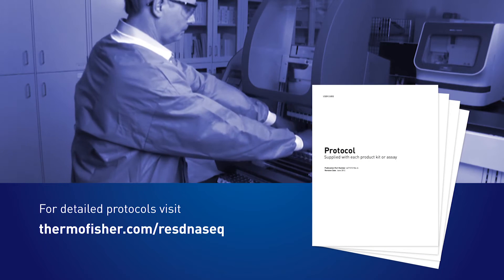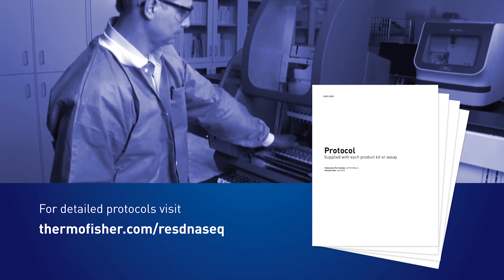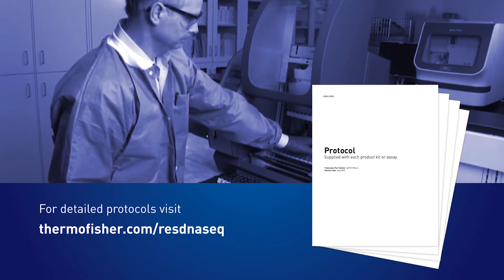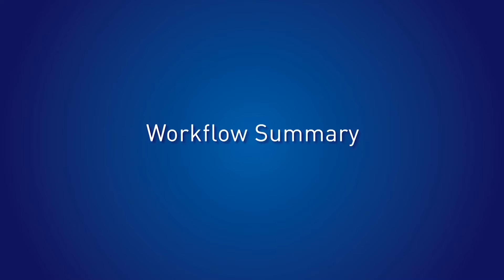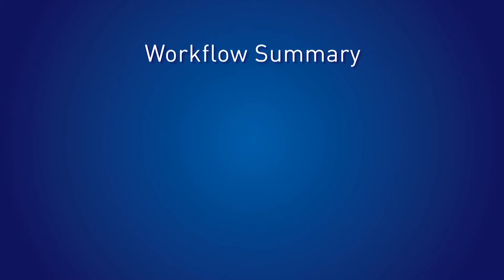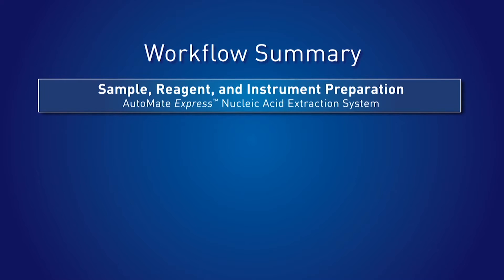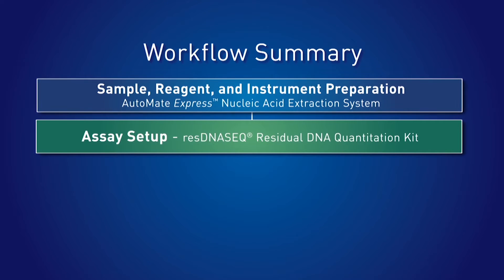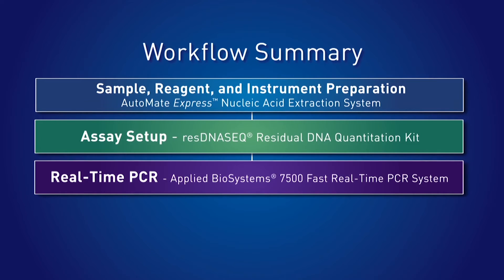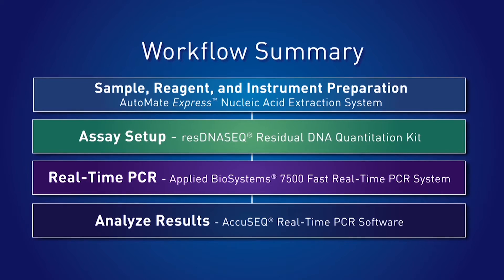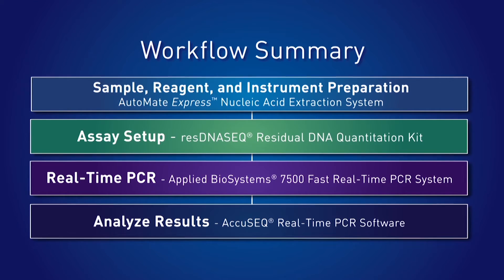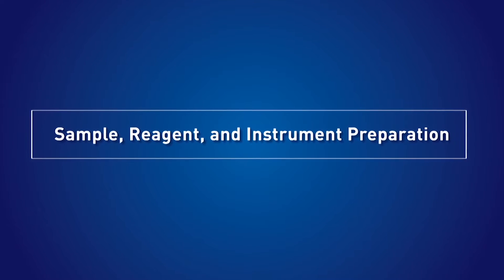This workflow video highlights and expands on your existing protocol. To get the most out of this tutorial, have your protocol at hand. The first step is sample reagent and instrument preparation using the Automate Express nucleic acid extraction system, then assay setup with the ResDNA Seek residual DNA quantitation kit, then real-time PCR using the Applied Biosystems 7500 Fast real-time PCR system, and finally analyze results with AccuSeek real-time PCR software.